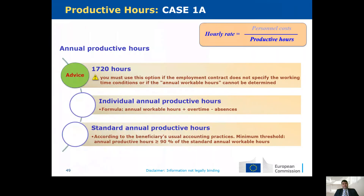For the calculation of productive hours, there are three options. First is the 1720 hours option, which is new compared to FP7 and must be used if the employment contract does not specify working time or if annual workable hours cannot be determined. Second is individual annual productive hours, where you take the annual workable hours and add overtime and absences. Third is standard annual productive hours, which must follow the beneficiary's usual accounting practices, with a minimum threshold requiring annual productive hours to be at least 90% of the standard annual workable hours.